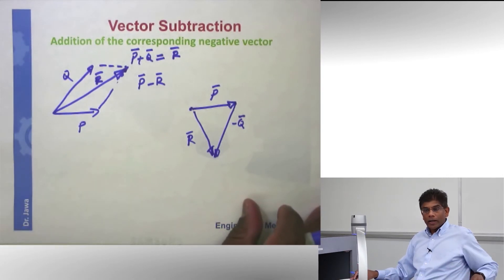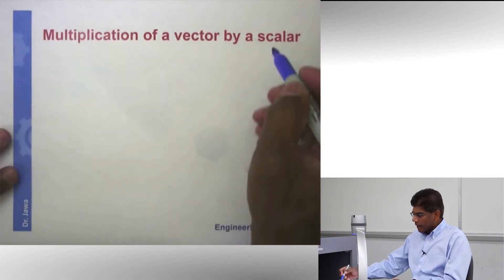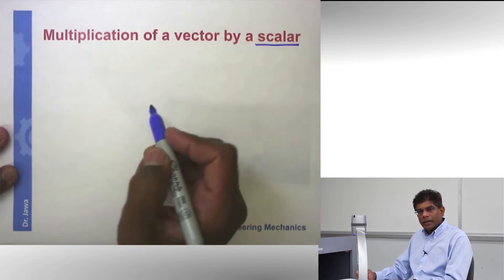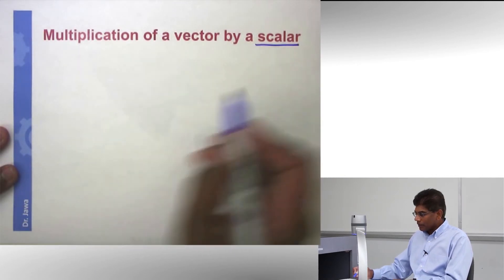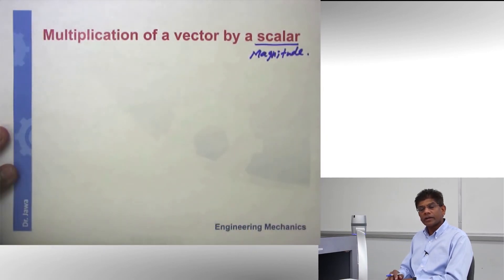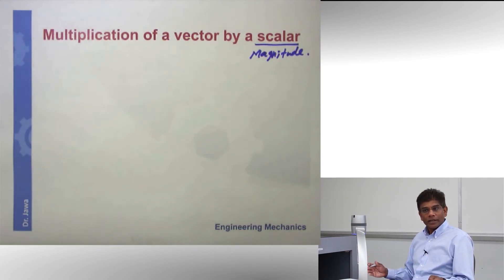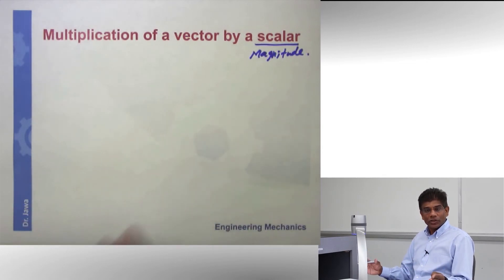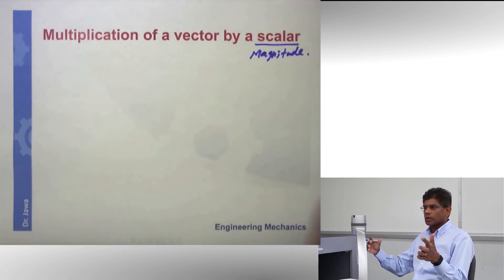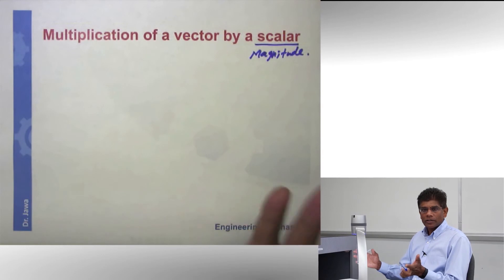Now let's take a quick look at multiplying a vector by a scalar. A scalar means it is just a number — it does not have any direction. What are the examples of scalar? The area of a triangle doesn't have a direction; it is just a number. How many people live in California is a number with no direction. So your age, population, area of a geometric figure — these are all magnitudes or scalars.